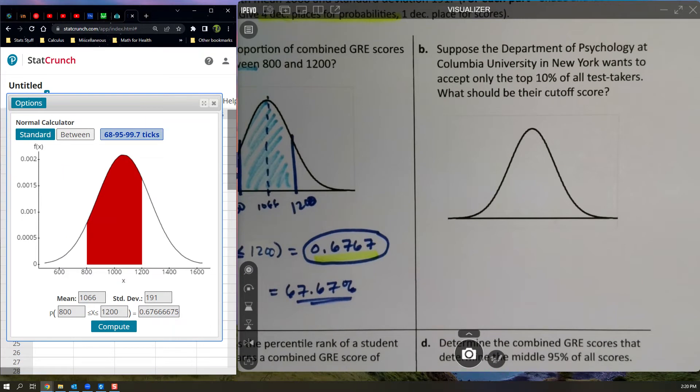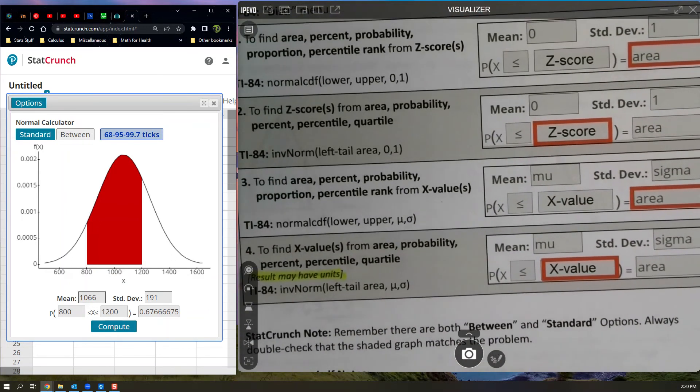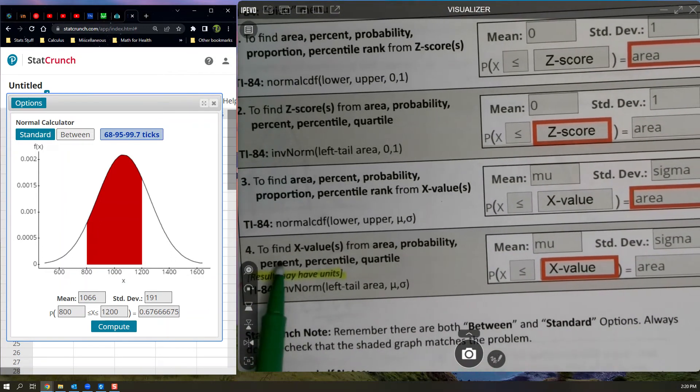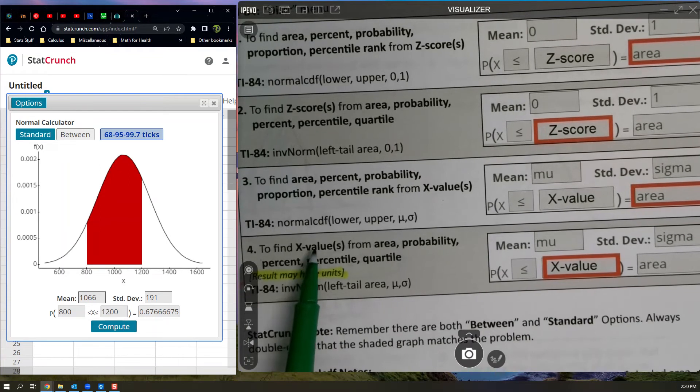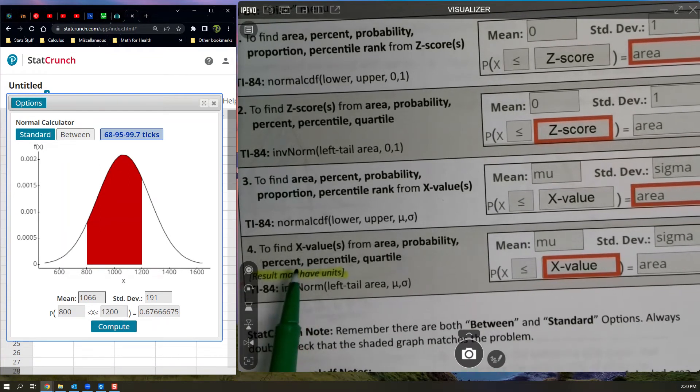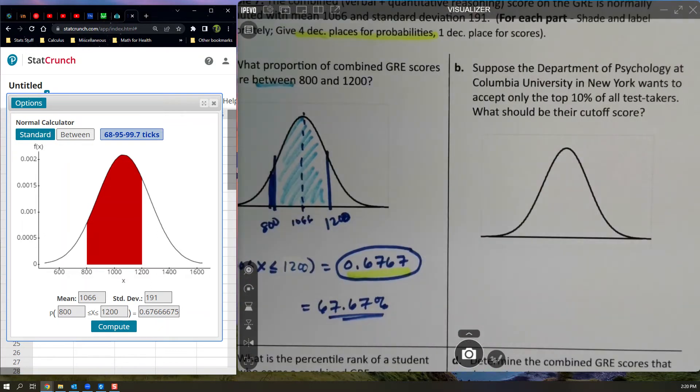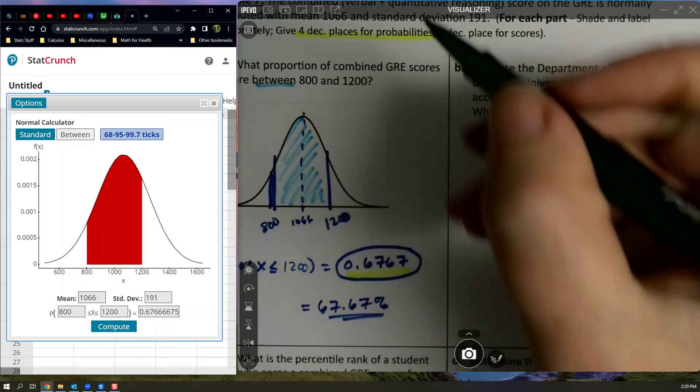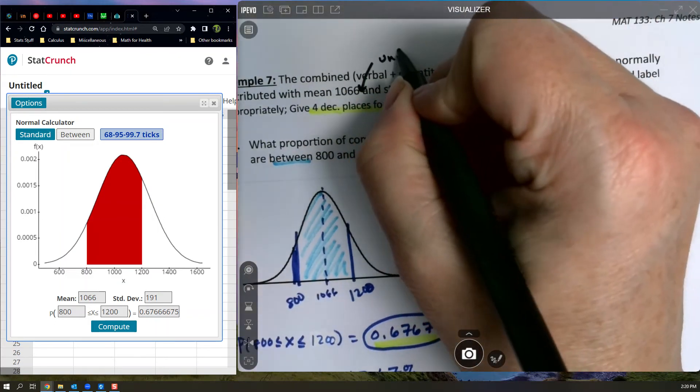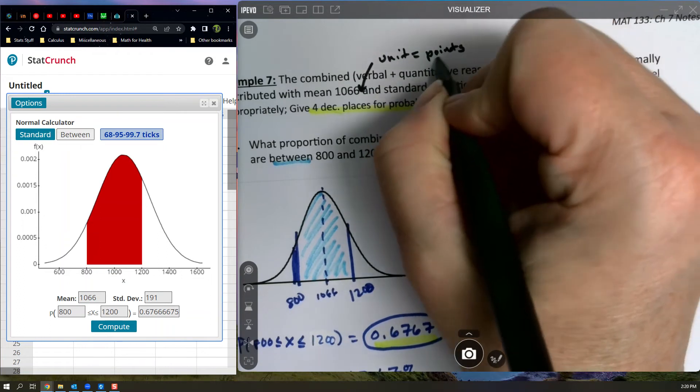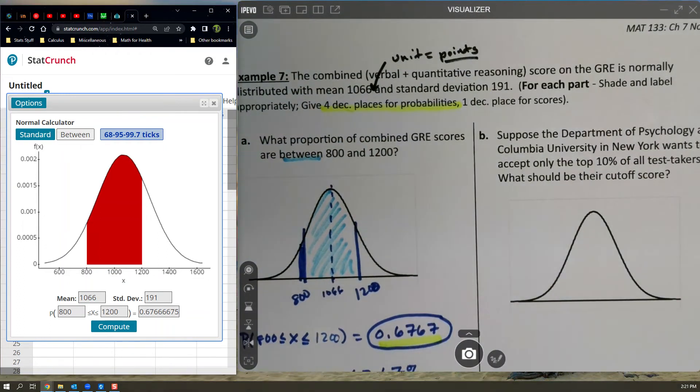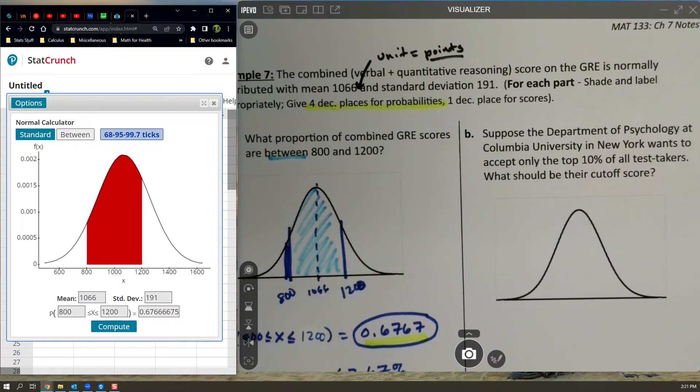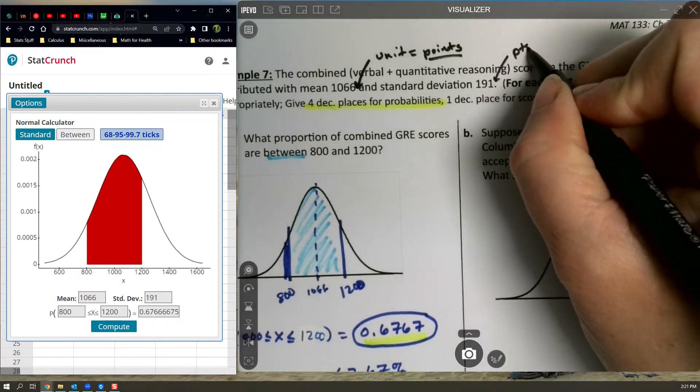Now suppose the Department of Psychology at Columbia University in New York wants to accept only the top 10% of test takers. So top 10%, I know a percent. I have the percent. It's known. I'm looking for the score, the X value. This is a number four. Let me just say for the record that the units on this one, I should have mentioned it. I'm going to say the unit is points. I'll probably change this so that it says that for future. I will fix that so it says points.